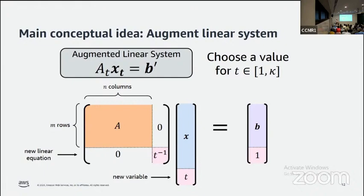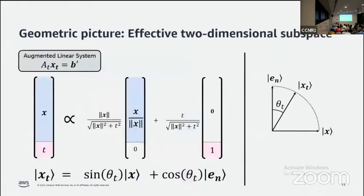We call this the augmented linear system with solution xt. Let's take a closer look at the solution xt. It can be decomposed into a portion proportional to the original solution x and a portion proportional to this new basis state en. We call it en because we started counting at zero, so we had n basis states originally e0, e1, e2 up to en-1, and now we've added en. Because it's within this two-dimensional subspace, we can draw it geometrically as lying at some angle θt with the en state, where θt depends on our choice of t.